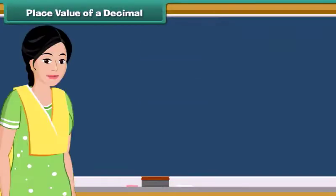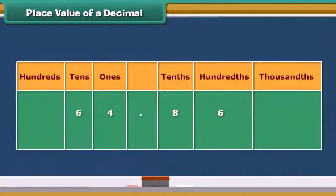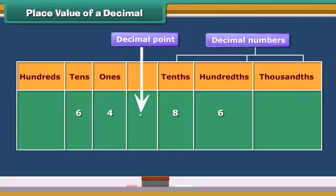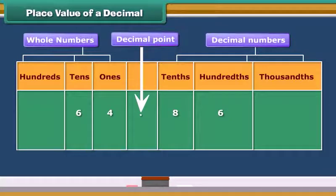Well, writing the decimals is pretty easy. Numbers to the right of the decimal point are decimals. The place values are tenths, hundredths, thousandths and so on. Whereas numbers to the left of the decimal point are whole numbers. The place values are ones, tens, hundreds and so on. Therefore, we read this number as 64 and 86 hundredths.